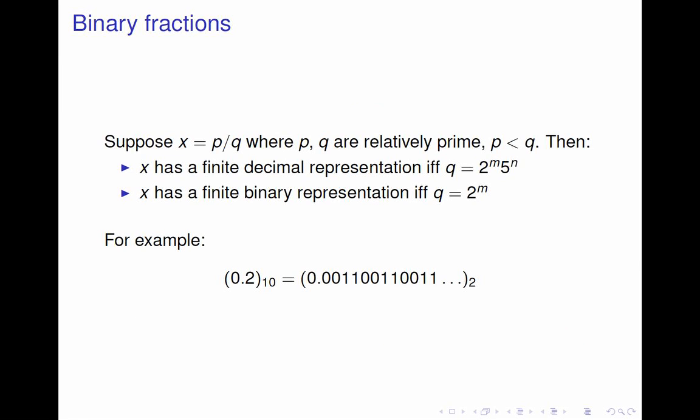Now, suppose that we're looking at a number like 0.2 base 10. You can write 0.2 as a finite decimal fraction because it's 2/10, or 1/5, and 5 is an integer power of 5. In general, if I have x = p/q where p and q are relatively prime, and q is a product of an integer power of 2 and an integer power of 5, then I can write down a finite decimal fraction representation of x. Something similar holds for binary, but there the denominator has to be an integer power of 2, no powers of 5 allowed.